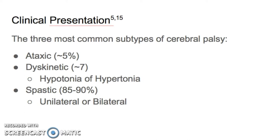About 7% of individuals with cerebral palsy fall under the dyskinetic subtype. As these individuals attempt to move, they have uncontrolled involuntary motions due to part of the basal ganglia being damaged. This subtype can be separated into two different patient categories: hypotonia and hypertonia.